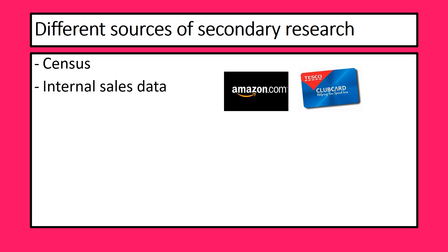We've also got internal sales data. The great thing about internal sales data is only the business which has it, has it. Amazon know what we have bought — they don't share that information with any other business, but it tells them what we've looked at on their website, what we've gone on to buy, what we've reordered, and what offers they've sent us and whether we respond. The Clubcard similarly records everything you've bought at Tesco, and when you sign up they ask about your age and gender. So they know quite a lot about us and can track what works, what sells, and how we react. It's an amazing piece of secondary research and it's only for that business.